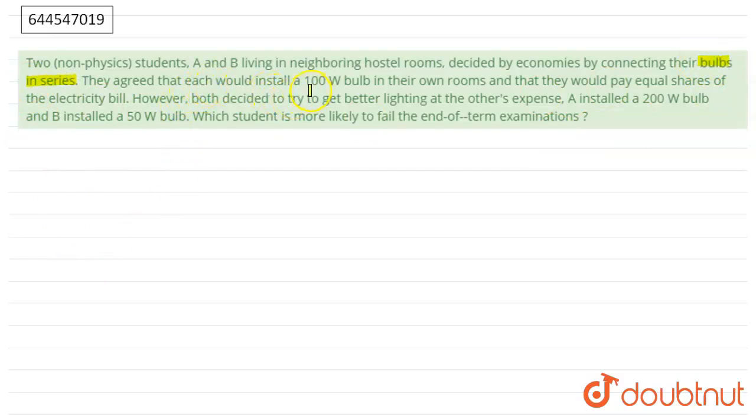That each would install 100 watt bulb in their own room and they would pay equal share of electricity bill. However, both decided to try to get better lighting at the others' expense.